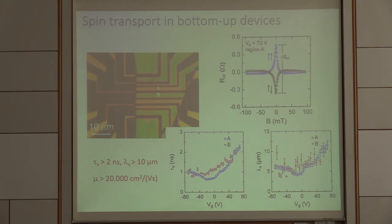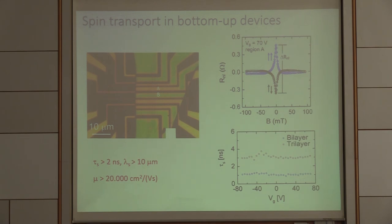We performed these experiments also on bilayer and trilayer. And you see for example for trilayer, we are coming very close to 4 nanoseconds spin lifetimes. That shows us that the bilayer and trilayer are mechanically a bit more stable and it seems that they form better interfaces.